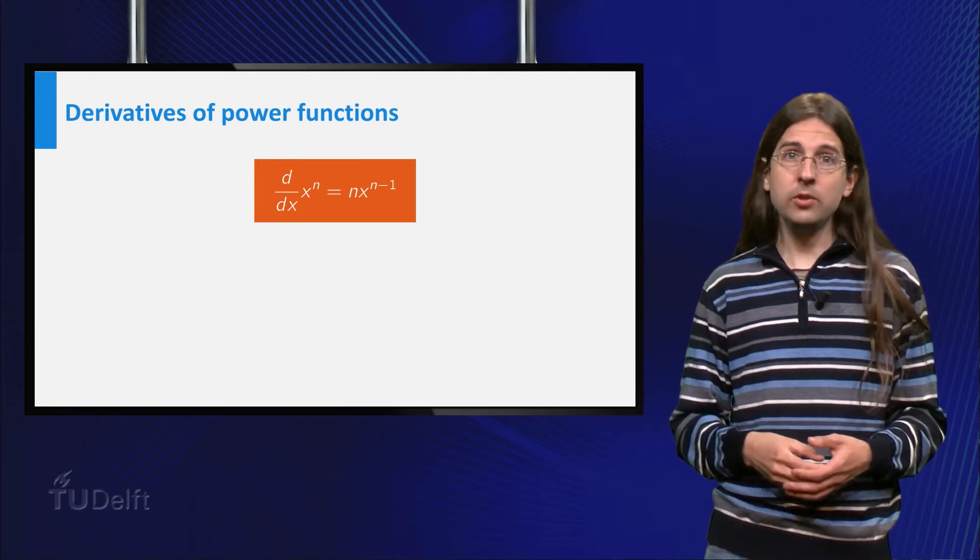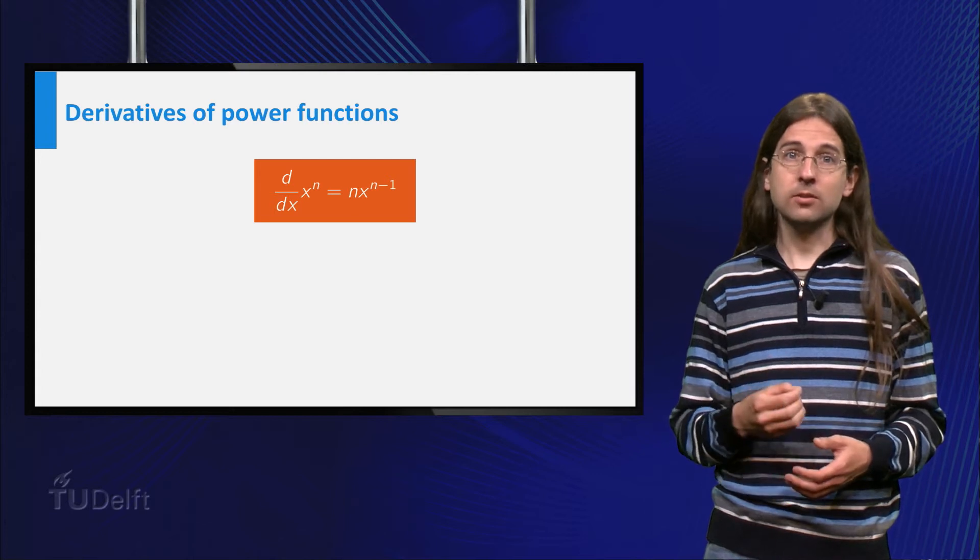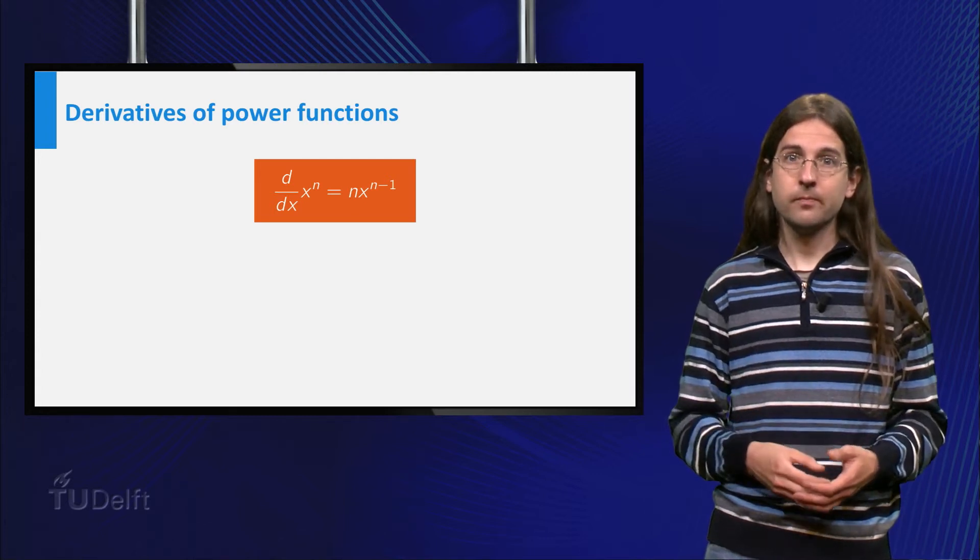To prove this for all positive integers n, you can continue as we did before. To show that the derivative of x to the power 5 follows this rule and thus equals 5 times x to the power 4, you can use the product rule and the fact that you already know the derivative of x to the power 4. This way you can also calculate the derivatives of x to the power 6, x to the power 7, and so on. That you can prove this for all positive integers n in this way uses the mathematical technique of induction, which we will not discuss here.